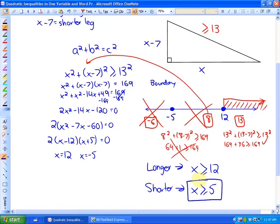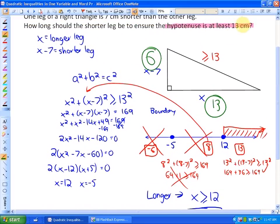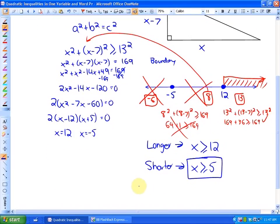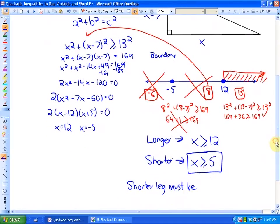Ask yourself if that makes sense. You could give yourself an example. If this was a length of 6, choose a number that's bigger than or equal to 5. The longer leg would be 6 plus 7, so it would be 13. If that was the case, would the hypotenuse be at least 13 centimeters? Absolutely, if the two legs were 6 and 13. So that is definitely the solution. The shorter leg must be 5 centimeters or longer.